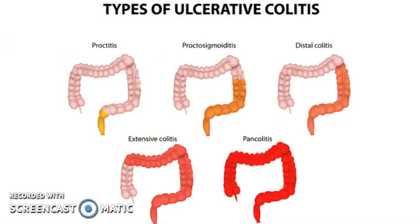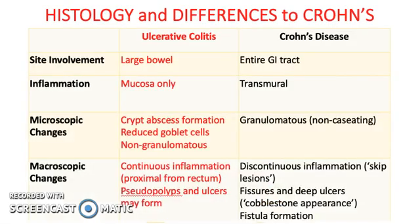The histological differences between Crohn's and ulcerative colitis are: site — UC is restricted to the large bowel while Crohn's affects the entire GI tract; UC involves the mucosa only and Crohn's is transmural; UC has crypt abscess formation, reduced goblet cells, and is non-granulomatous, while Crohn's is granulomatous; UC has continuous inflammation with pseudopolyps and ulcers, whereas Crohn's has discontinuous inflammation with skip lesions, cobblestone appearance, and fistula formation.